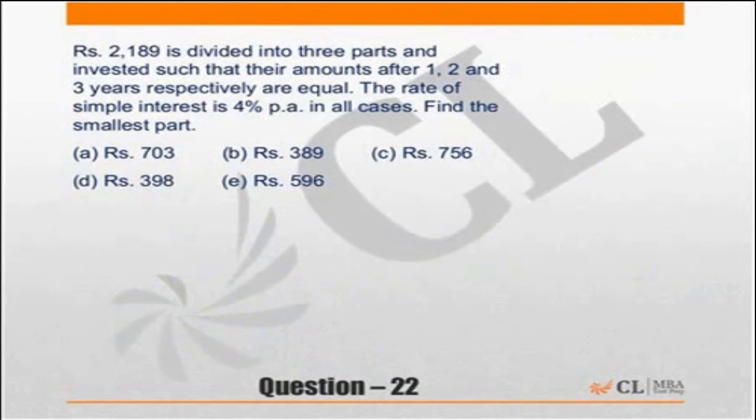Question 22. Rs. 2,189 is divided into 3 parts and invested such that the amounts after 1, 2 and 3 years respectively are equal. Rate of simple interest is 4% per annum in all cases. Find the smallest part.